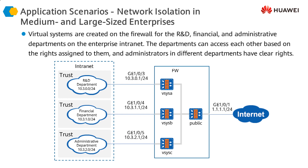In large enterprise environments, each department could have their own security administrator managing their own logical firewall. All of these firewalls are called virtual systems. The default firewall is called the public system — if no virtual systems are created, only one logical firewall runs on the physical firewall and it is called the public system. Even after creating virtual systems, the public system always remains. So there are two types of logical firewalls: the public system, which is the default, and the virtual systems.